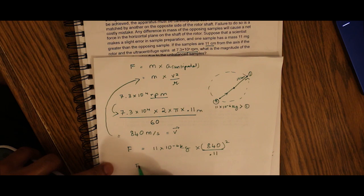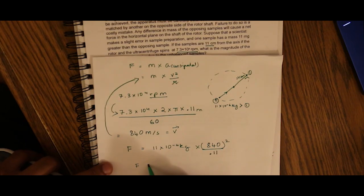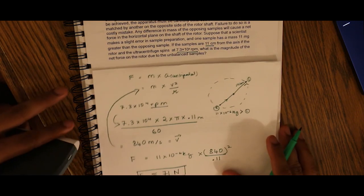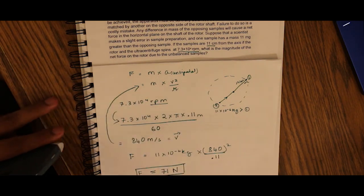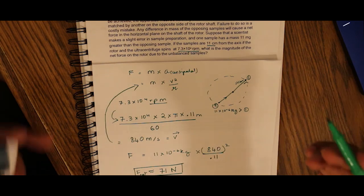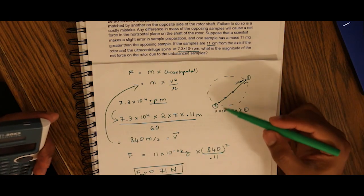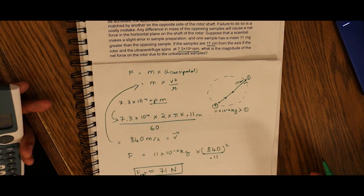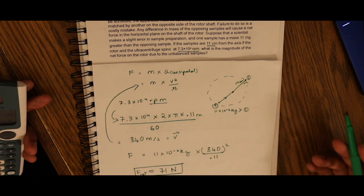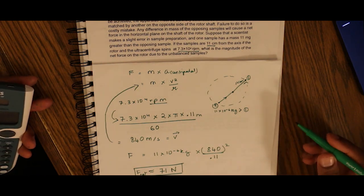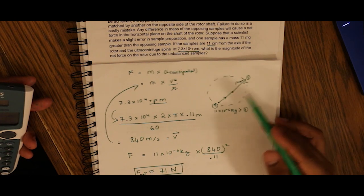This gives a force of approximately 71 newtons. That is what the question asked us: what is the magnitude of the net force on the rotor due to the unbalanced sample? There is a net force in this direction, which will eventually cause the lighter sample's test tube to break in the centrifuge — I've seen it happen before.